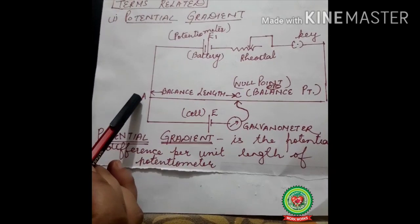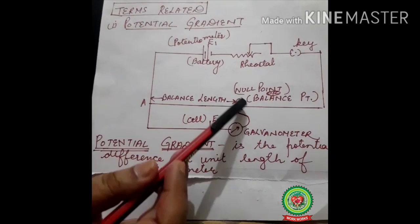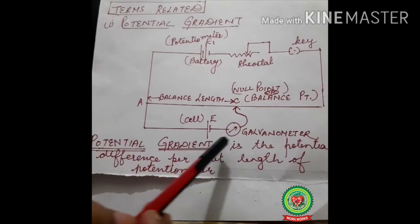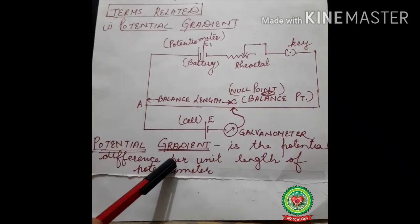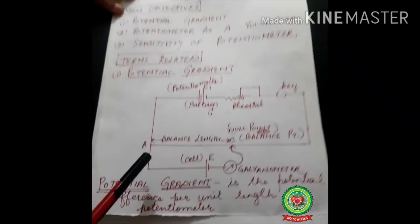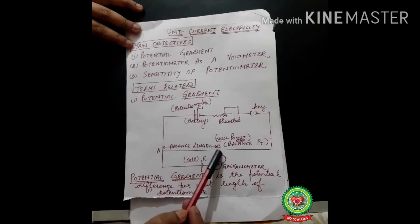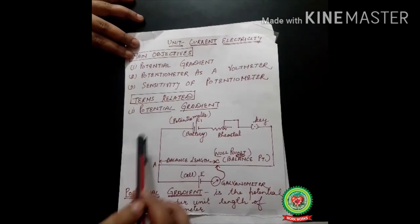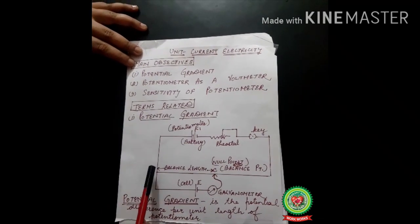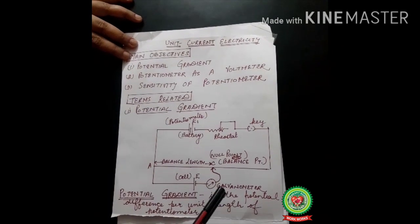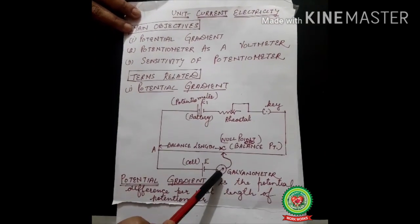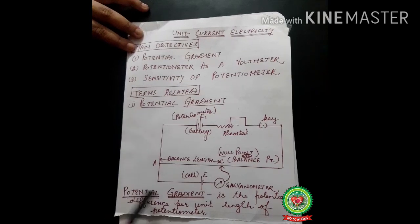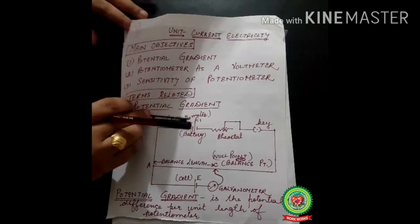This point is called the null point or the balance point. The distance from A till this point is called the balanced length. From here we can conclude: potential gradient is the potential difference per unit length of the potentiometer — meaning, with a change in length, how much the voltage changes. Here we have not used a voltmeter, but we can still find the value of voltage using the formula.